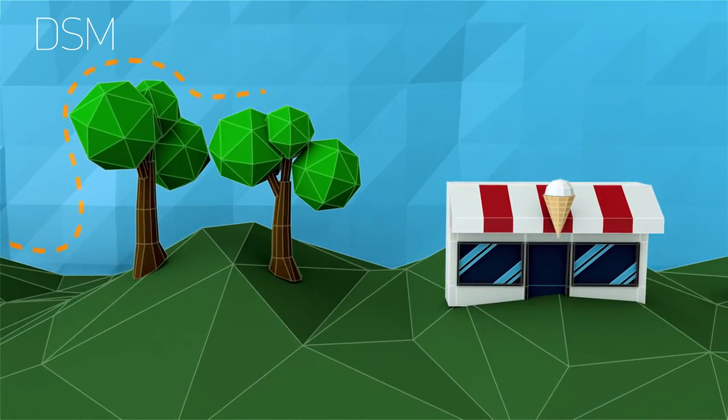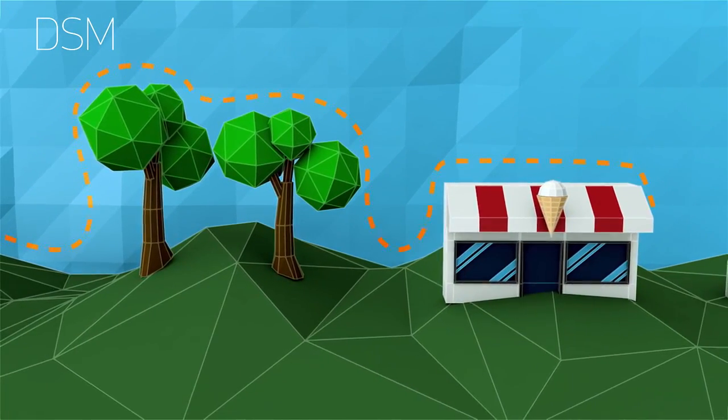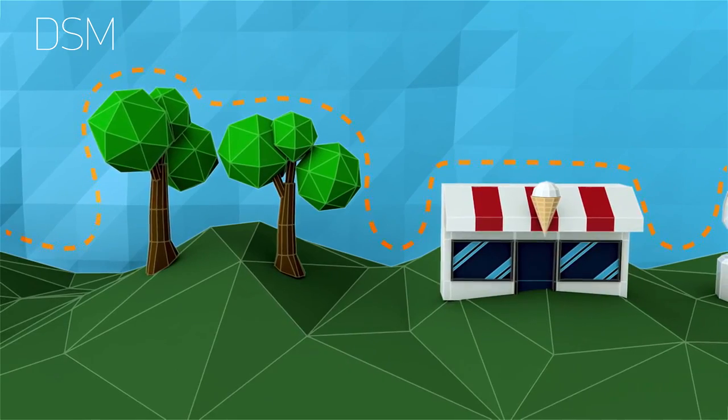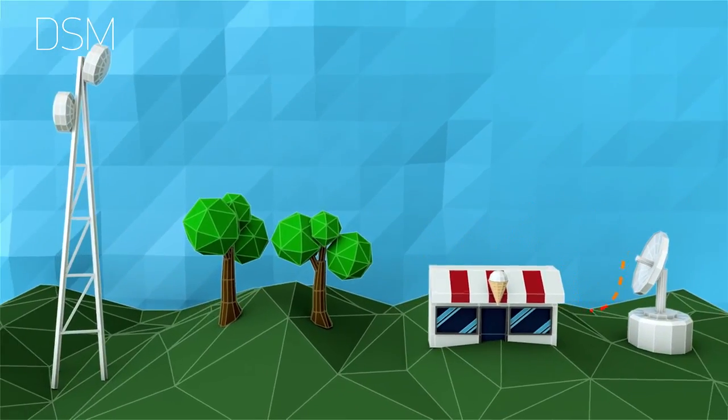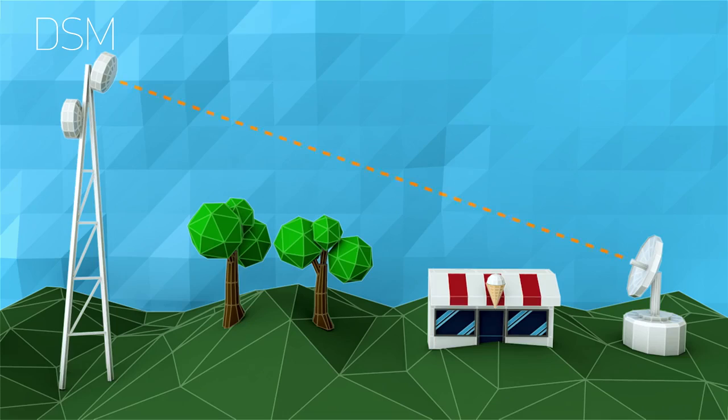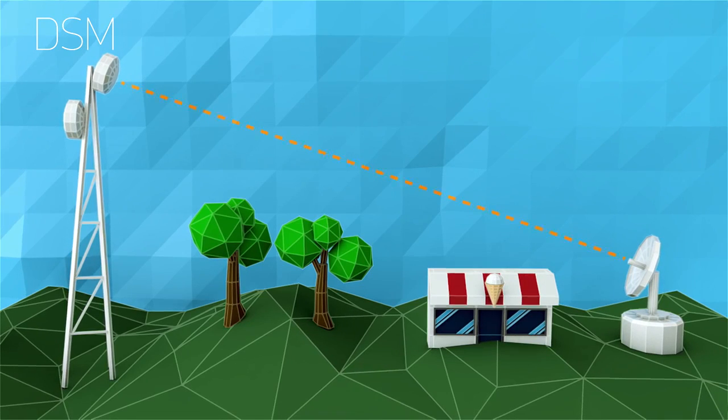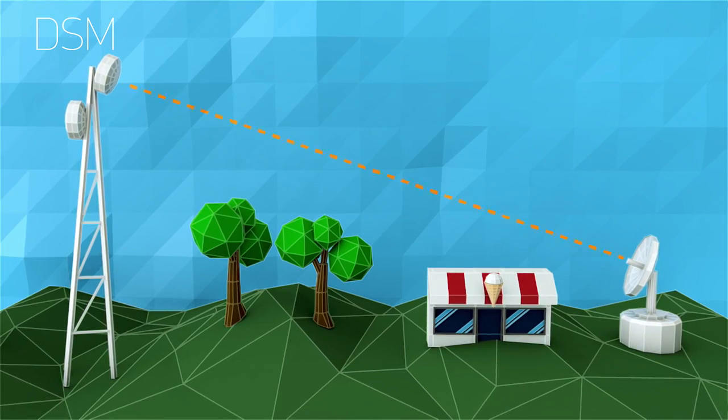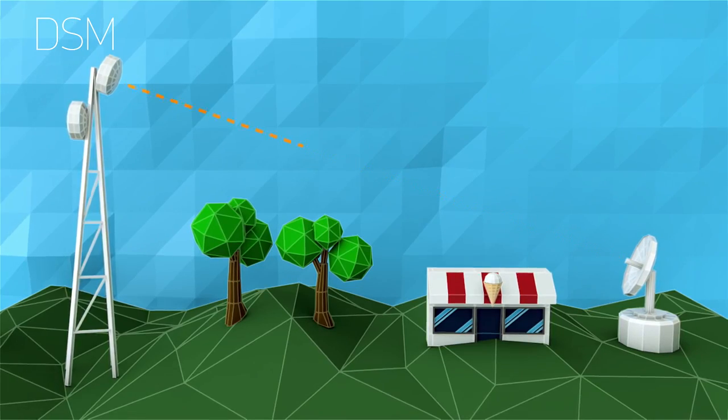Digital surface models, or DSMs, show the elevation of the ground as well as all the things on the ground, like trees, buildings, cars, you name it. Say you need to determine line of sight for cell phone signal propagation. You would want a DSM to help identify how both the terrain and the features on the terrain would impact your cell signal.